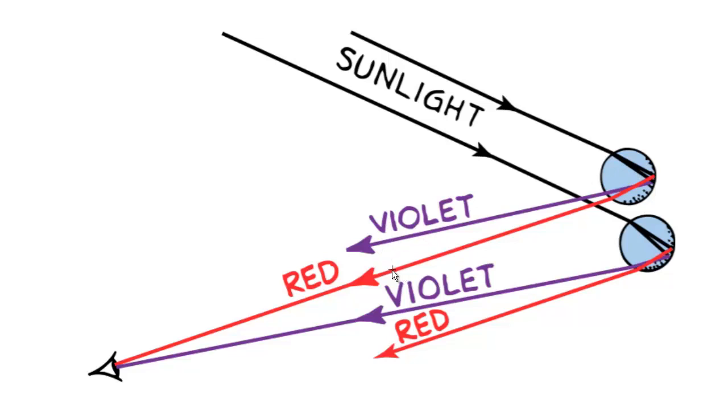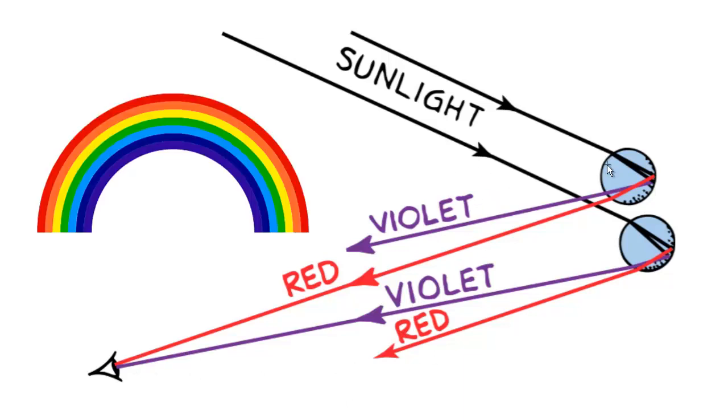But it doesn't actually work that way because the light has to get to your eye. Every single drop can only show you one color. From this drop up here, the violet's going up over your head but the red comes into your eye. From lower drops, the violet goes right into your eye and that's what you see. So what actually happens is the red is on top in a rainbow and the violet's down on the bottom.